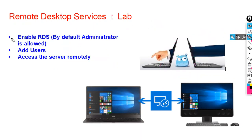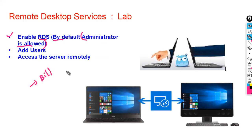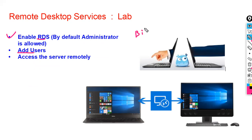If you need more than two users to access the device remotely, you need to purchase a license. By default, when you enable Remote Desktop Service, administrator is already allowed access. If you want another user, such as Bill, to access the device remotely, you need to add them manually. In this lab, we will enable Remote Desktop Service, add Bill, and then access the device remotely.